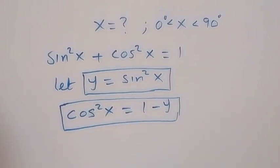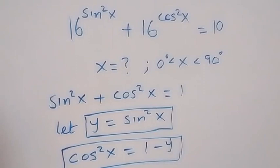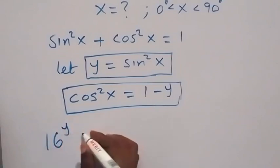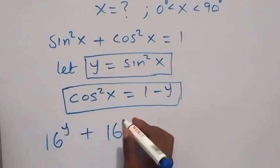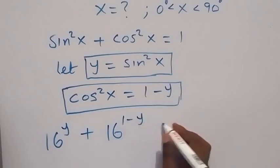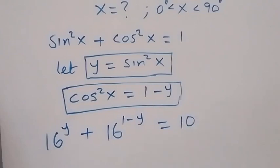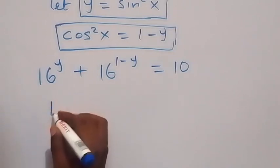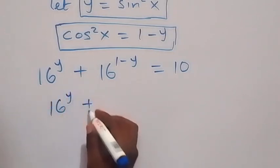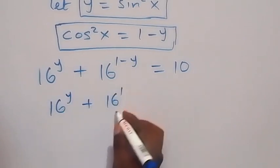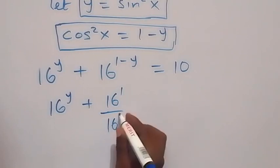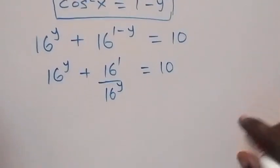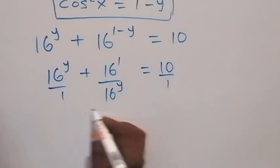We can make this substitution in terms of y. So we have 16 raised to power y plus 16 raised to power 1 minus y equals 10. From the law of indices, we rewrite this as 16 raised to power y plus 16 raised to power 1 — which is 16 — over 16 raised to power y, equals 10.